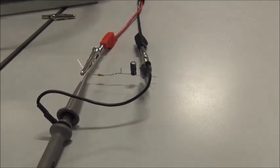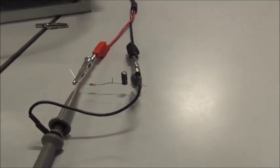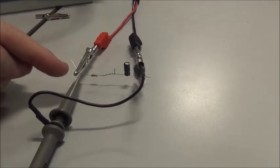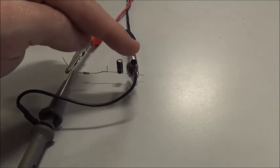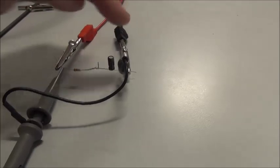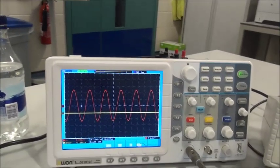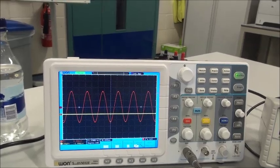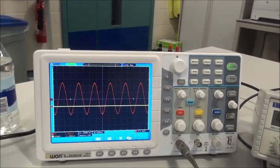Now I've connected up channel 1 of the oscilloscope. We know that the probe goes to positive and the ground of the probe goes to negative there. On the scope, we've already seen the waveform.